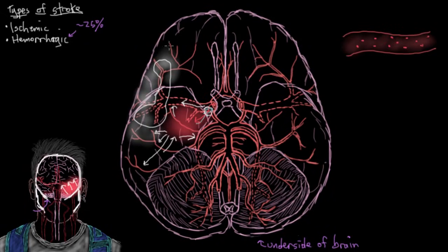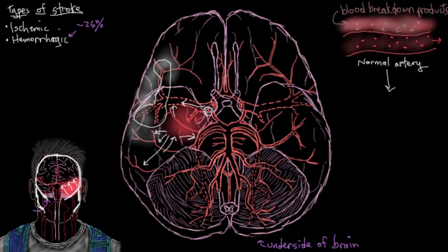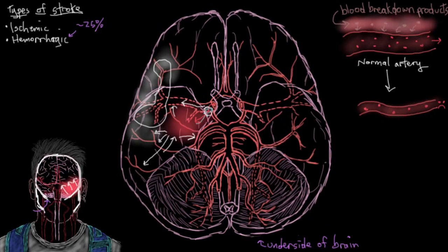Here's your blood vessel as it normally looks — it's at a nice wide diameter and letting lots of blood cells through. But if blood is sitting around on the outside of blood vessels, it eventually starts to break down into its components — we'll call those blood breakdown products. These products start to irritate the normal blood vessel. In response, blood vessels undergo what's called vasospasm: they sort of close up a little, so not as much blood gets through after the vessel has been irritated and clamped down.